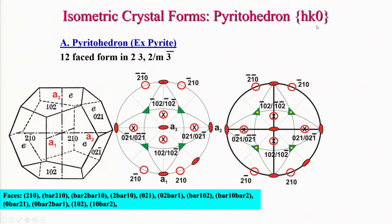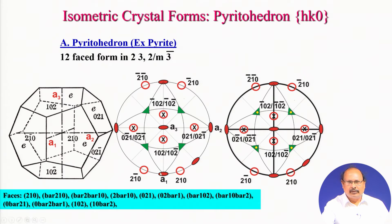When we talk about hk0, recall that when 0 appears in the position of c, it represents a vertical crystal face. Let us take h equal to 2 and k equal to 1, giving us crystal face 2 1 0. The position of 2 1 0 lies between the points 1 0 0 and 1 1 0, so 2 1 0 will lie in the zone between these two. This will be acted upon by the triad, and I am discussing this with respect to the point group of symmetry 2 3.